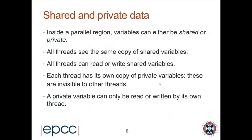When inside a parallel region, variables accessed can be either shared or private. All threads see the same copy of shared variables — there is one copy and all threads can read or write it. Each thread has its own copy of private variables, which are invisible to other threads — a private variable can only be read or written by its owning thread.